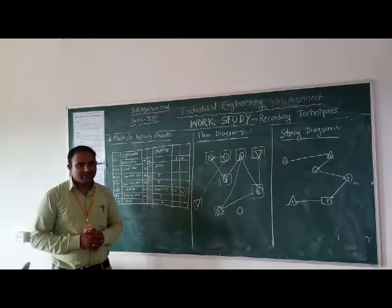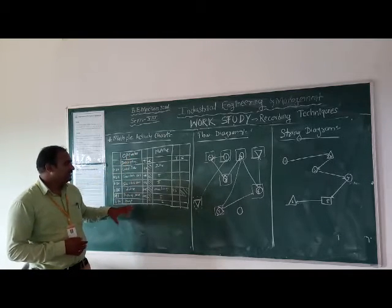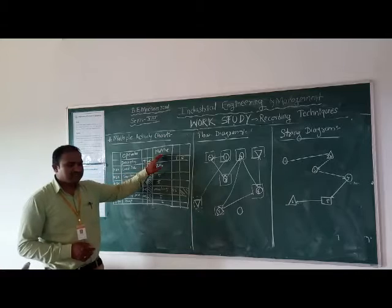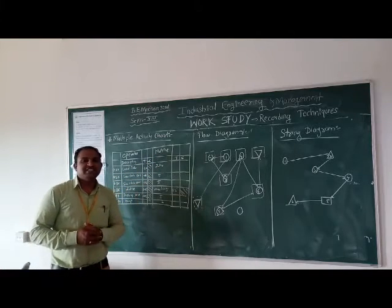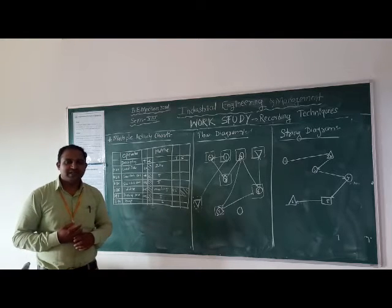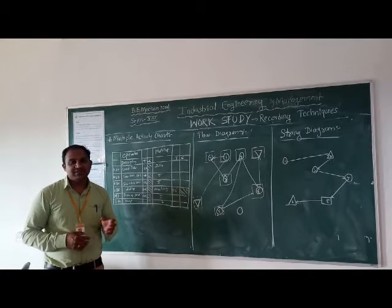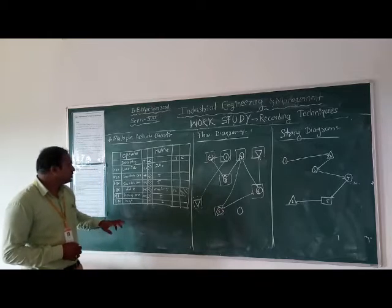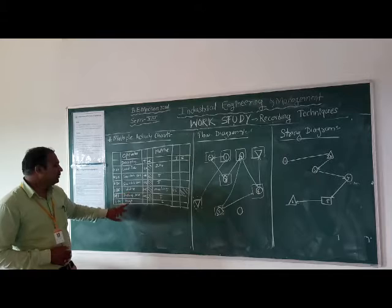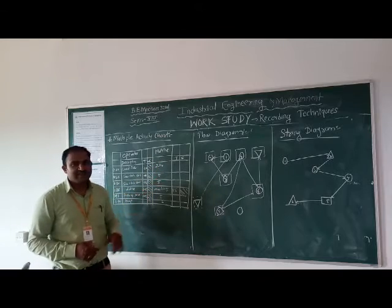So here we use only two symbols. Take the example: there are two distinguishing columns — the operator and the machines. This shows the relationship between what the workers are doing when the machine is working, and the total idle time of workers when there is an automatic machine in operation.